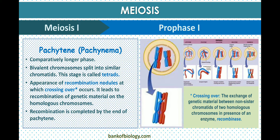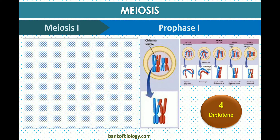Crossing over is the exchange of genetic material between two non-sister chromatids of homologous chromosomes, occurring in the presence of an enzyme called recombinase.